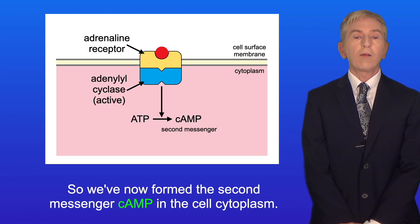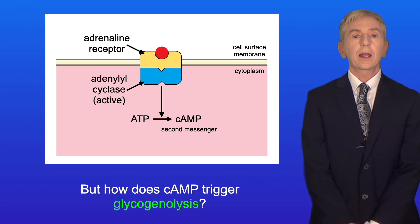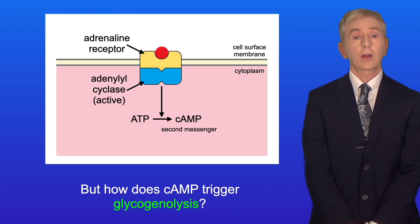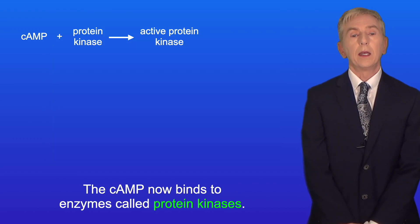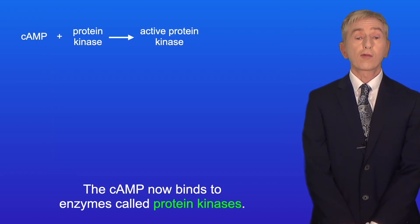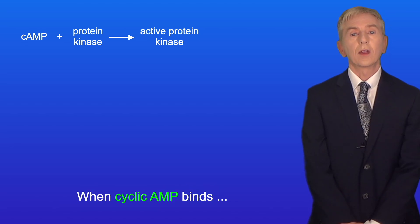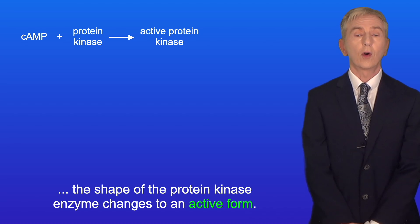So we've now formed the second messenger cyclic AMP in the cell cytoplasm. But how does cyclic AMP trigger glycogenolysis? Well, the cyclic AMP now binds to enzymes called protein kinases. When cyclic AMP binds, the shape of the protein kinase enzyme changes to an active form.